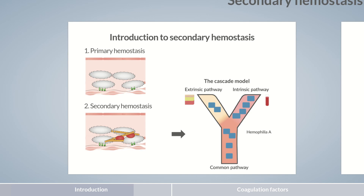Let's look at an example. Hemophilia A is a bleeding disorder caused by deficiency in factor VIII, which plays a role in the intrinsic pathway. Because the extrinsic pathway of patients with hemophilia A is still intact, a bleeding tendency is usually not expected. However, since hemophilia is a serious condition, it becomes quickly evident that coagulation must proceed in a manner different to that of the two pathways, which are seemingly independent of one another. Therefore, we'll be presenting a new coagulation model termed the cell-based model of coagulation. It takes into account recent findings on coagulation in blood vessel injury and offers a better way of describing conditions such as hemophilia.